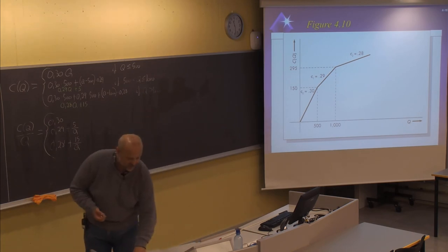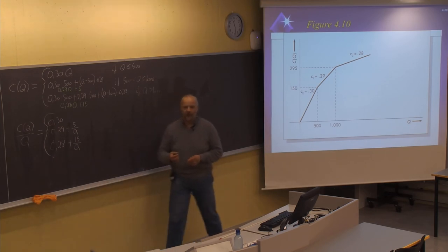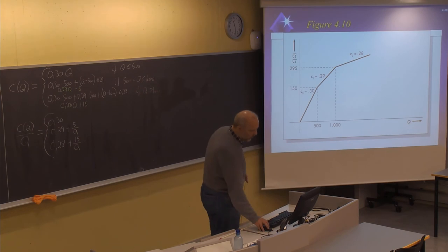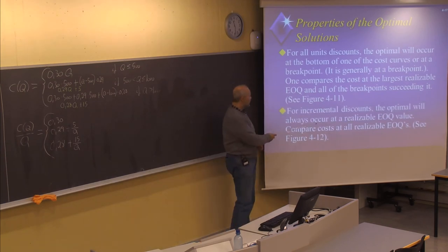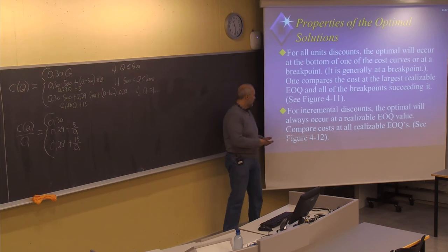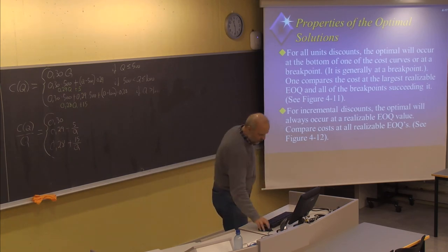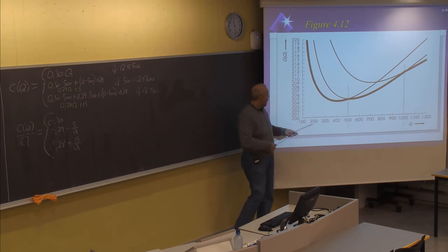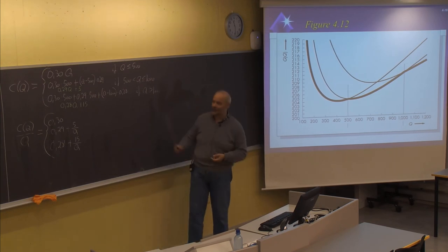We can now use this unit price in the cost function to find the optimal order size when using the incremental quantity discount. The optimal will always occur at the realizable EOQ value, and we should compare the costs at all realizable EOQ values. Looking at the figure for this example, we know that the order size of 400 is at one point, giving the same cost as calculated with the all-unit cost, because then we don't have a discount at all.